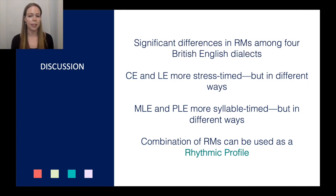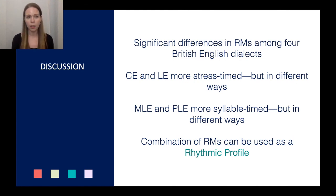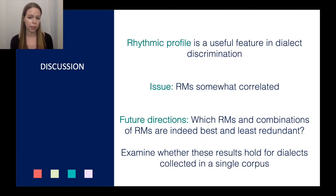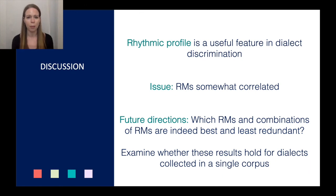Overall, there were significant differences in rhythm metrics among the four British English dialects. As expected, the Anglo varieties — Cambridge and Leicester English — were more stress-timed, but in slightly different ways from one another. MLE and Punjabi Leicester English were more syllable-timed, but also in different ways from one another. Altogether, this suggests that the combination of rhythm metrics could be used fruitfully as a rhythmic profile of a language. One issue is that the RMs are somewhat correlated with one another, so future work should identify which RMs and combinations are best and least redundant.